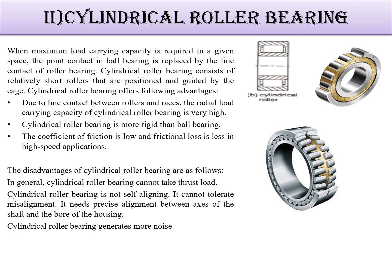As a disadvantage, cylindrical roller bearing cannot take thrust load due to its line contact. It is not self-aligning — the alignment between the axis of the shaft and the bore of the housing must be precise. If there is any misalignment, the bearing will not work properly.